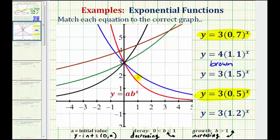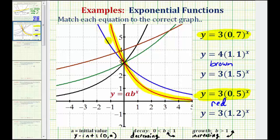Looking at our graphs, there are only two graphs that represent exponential decay: the blue function and the red function. Notice how the red function is decreasing faster because it's steeper going downhill from left to right, which means the red graph has a smaller value of b. The closer b is to zero, the faster it decreases, so the red graph is the equation with b equal to 0.5, and the blue graph is the equation with b equal to 0.7.